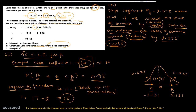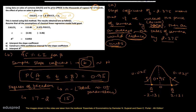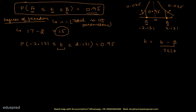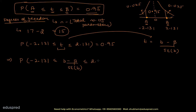Substituting A and B: P(−2.131 ≤ T ≤ 2.131) = 0.95. Now substituting T = (b − β) / SE(b): P(−2.131 ≤ (b − β)/SE(b) ≤ 2.131) = 0.95. We want to isolate beta, so we multiply all three terms by SE(b), cancelling the denominator in the middle term.